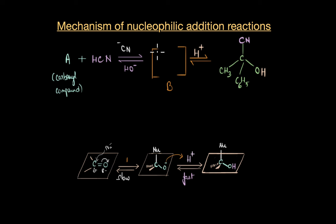So the structure of our intermediate would look something like this, where we have the same skeleton except we have O minus here instead of OH. Now from here we can easily figure out the structure of A, right.